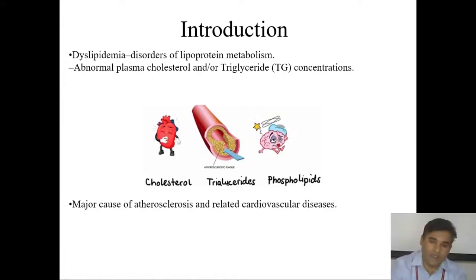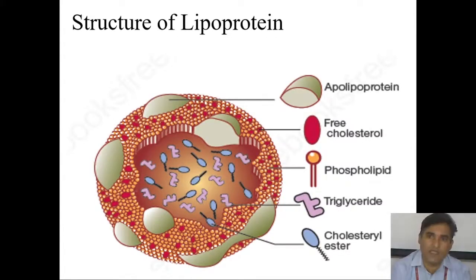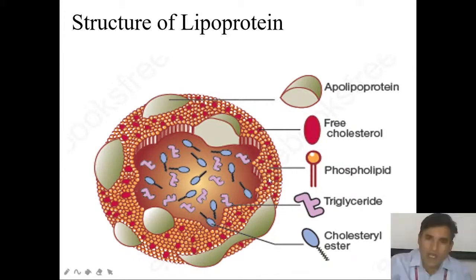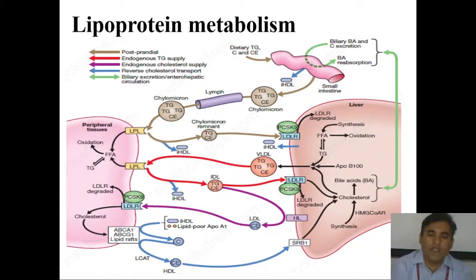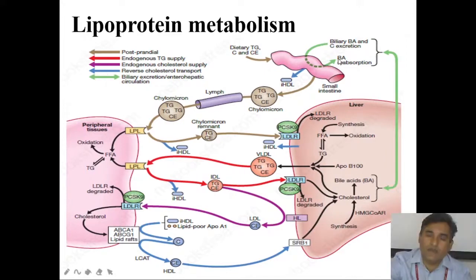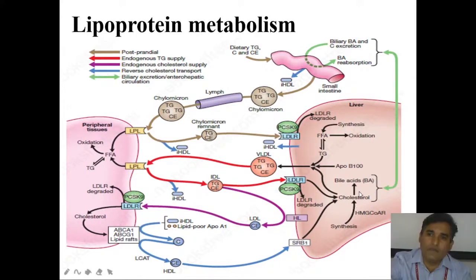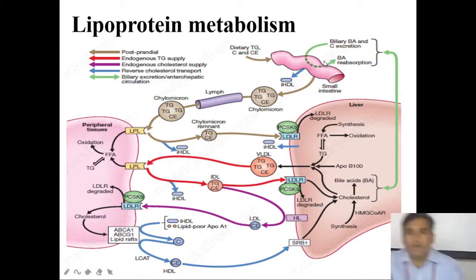Looking at the typical structure of lipoproteins: it consists of apolipoproteins, free cholesterol, phospholipids, and the core contains triglycerides and cholesterol esters. In normal lipoprotein metabolism, bile is also a form of cholesterol which gets released into the GIT, and by intrahepatic circulation it enters into the liver, further responsible for synthesis and turnover of other cholesterols. The liver directly releases bile into the GIT.